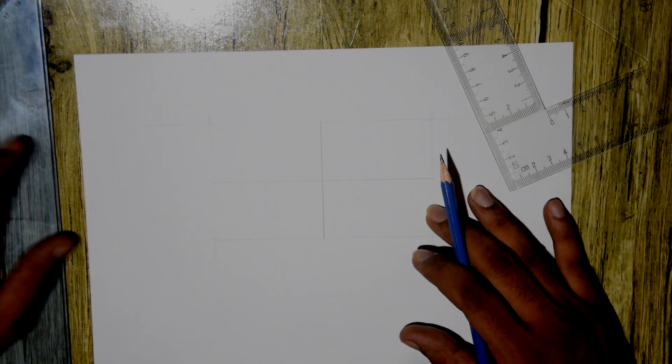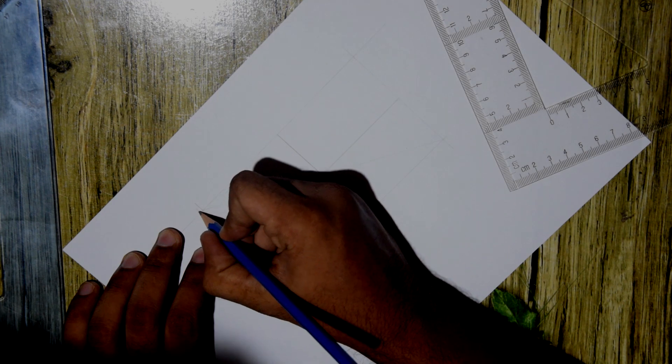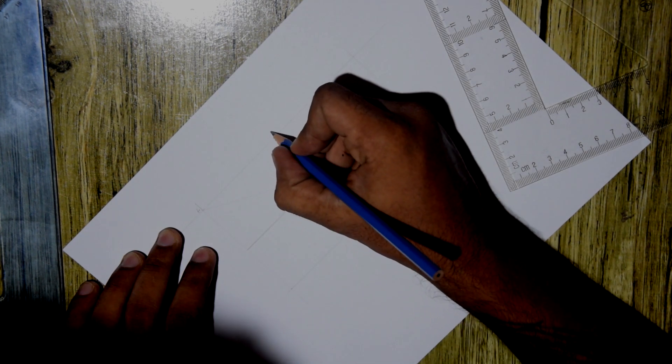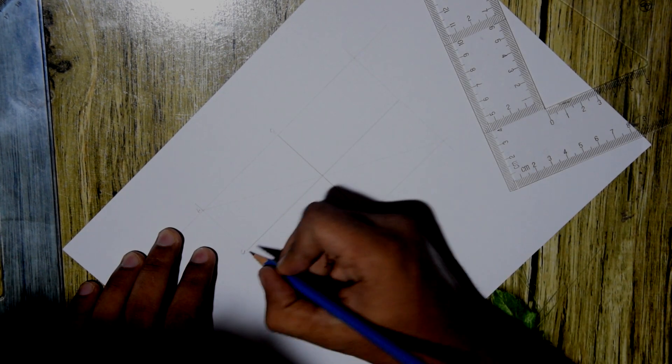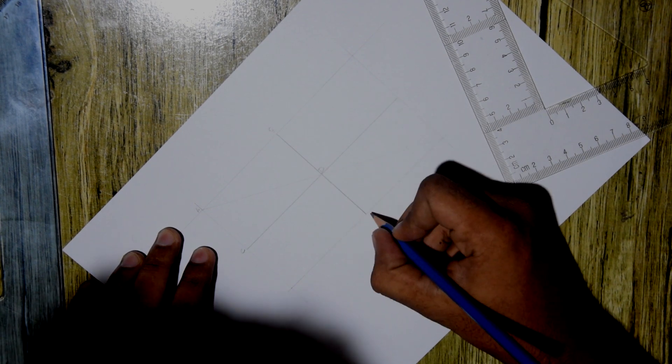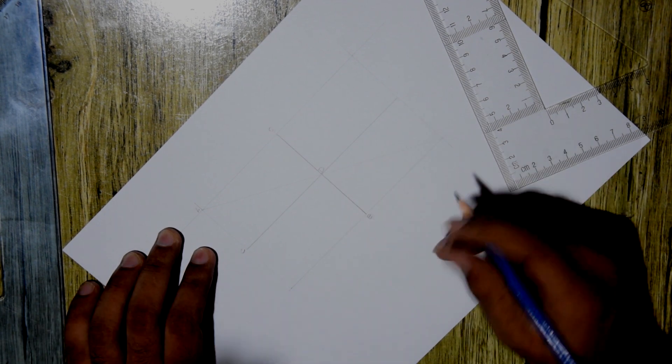Now that we have four quadrants, we can start working. But first, let's label these spots as a, b, c, d, and e.